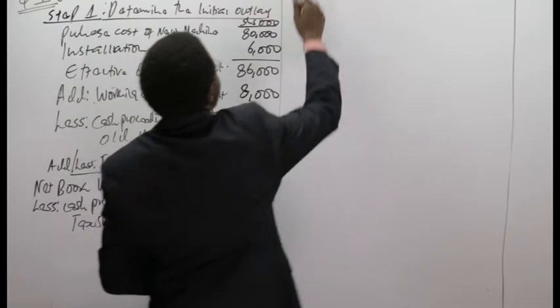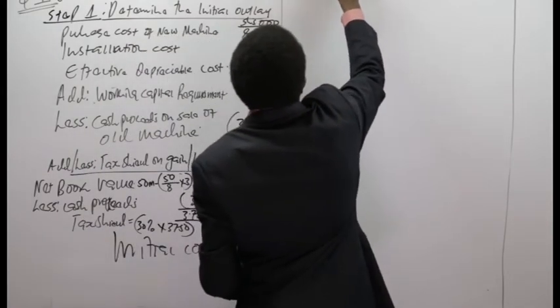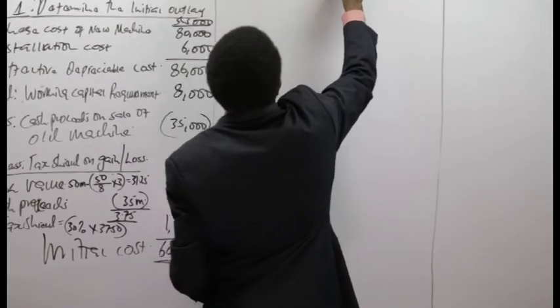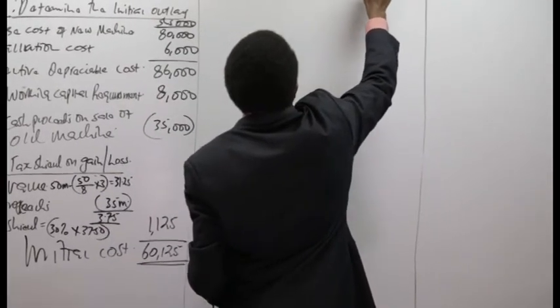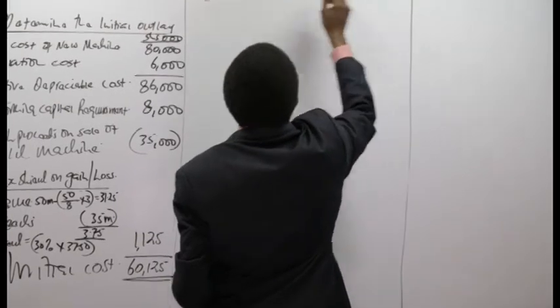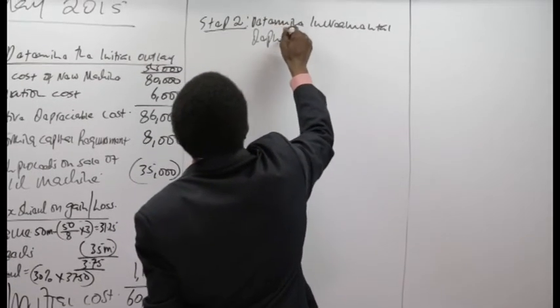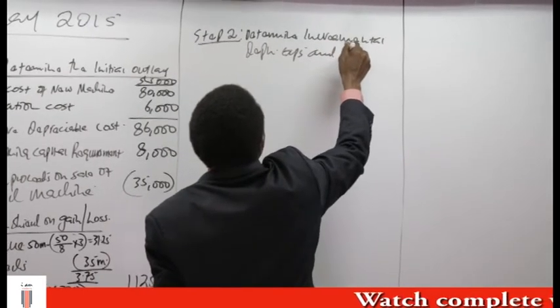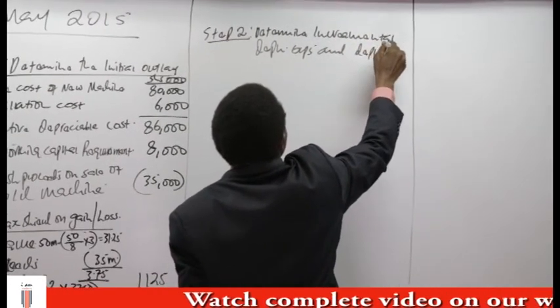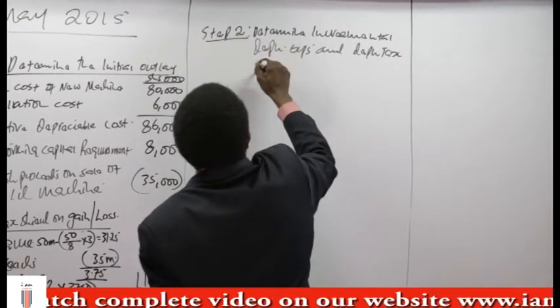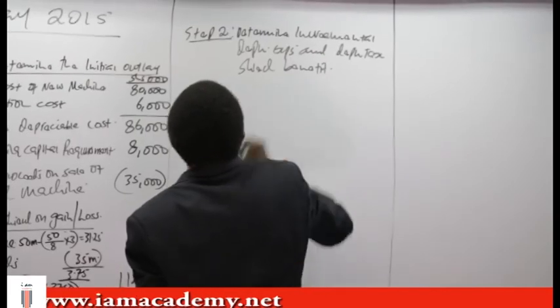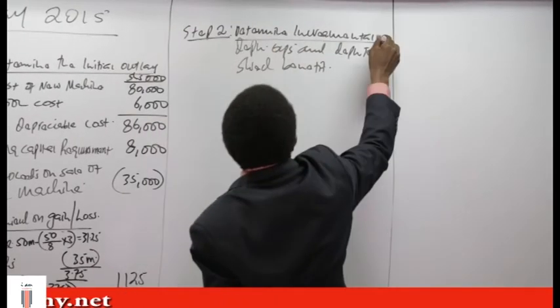Step number two: we determine the incremental depreciation expense and the depreciation tax shield benefit.